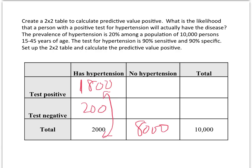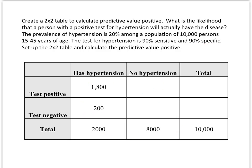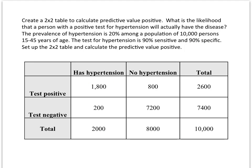We now use the 90% specificity times the 8,000 to figure out cell D which is 7,200. Do the subtraction for cell B which is 800 and we can figure our totals. And here we have then our completed table.